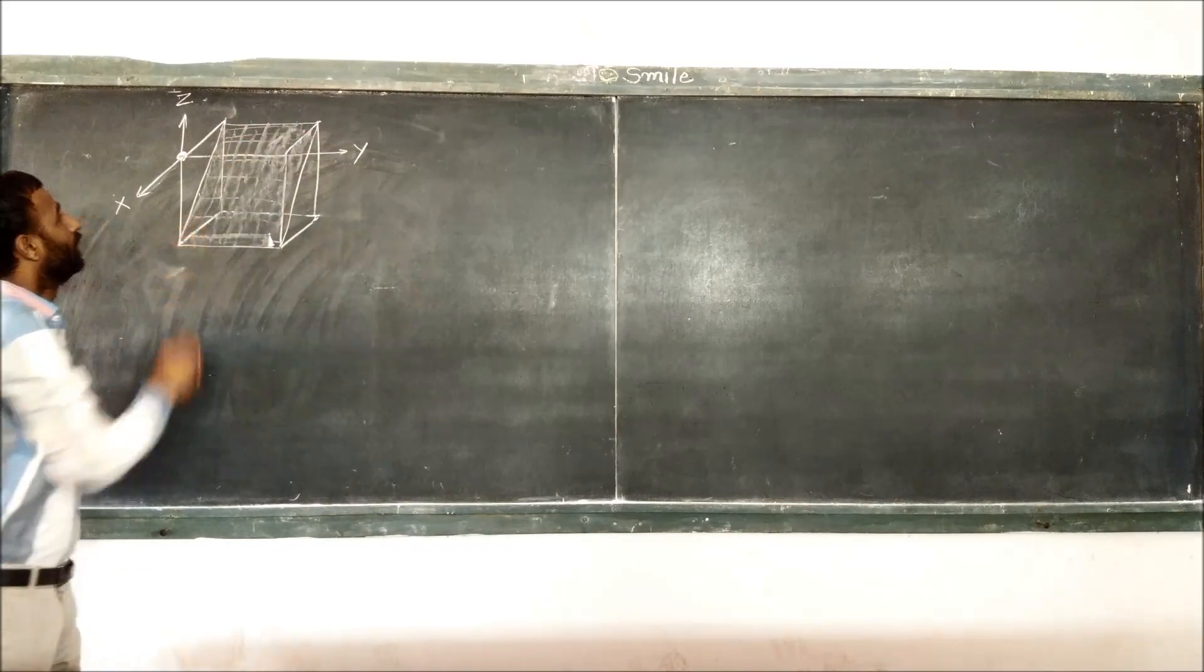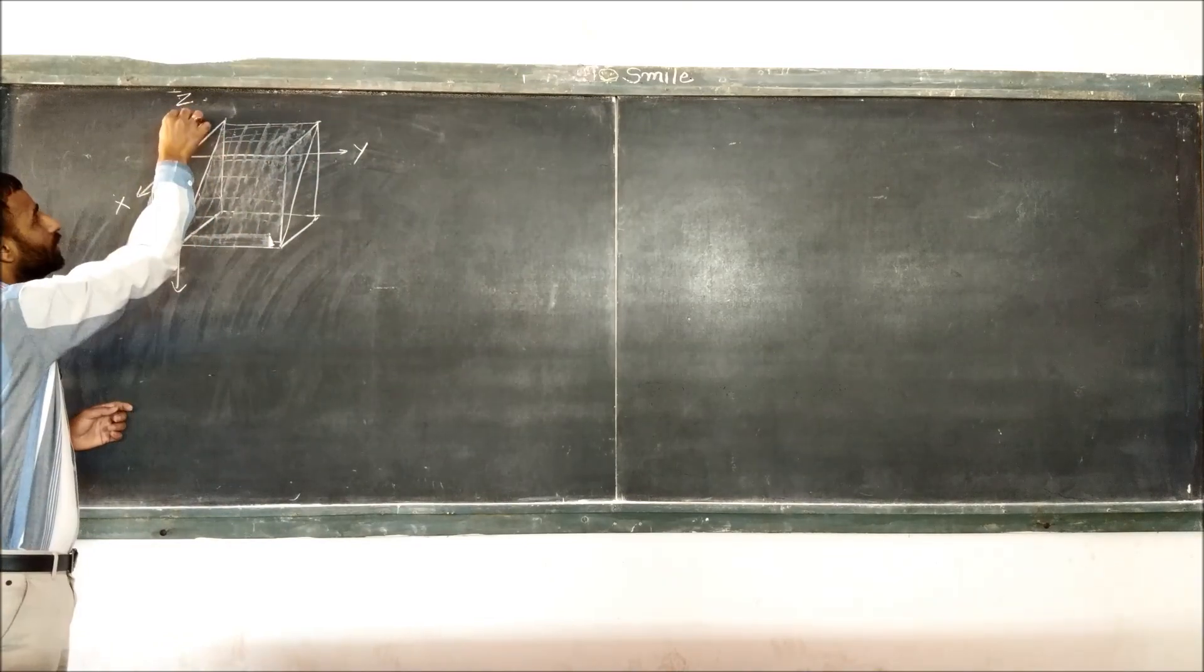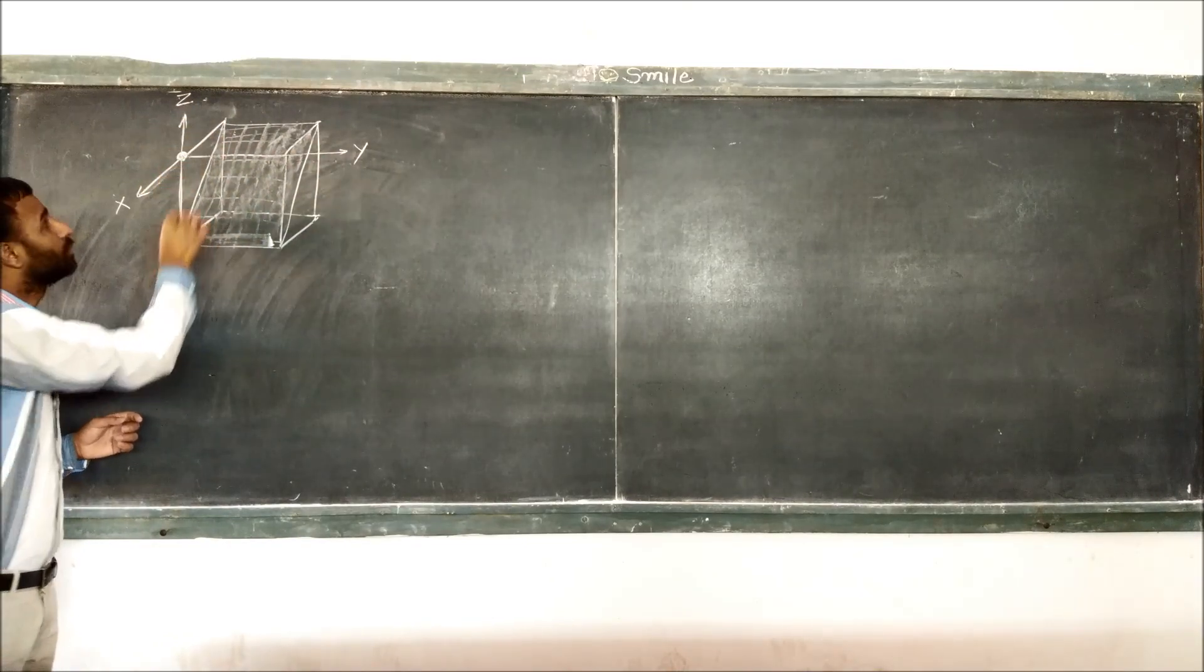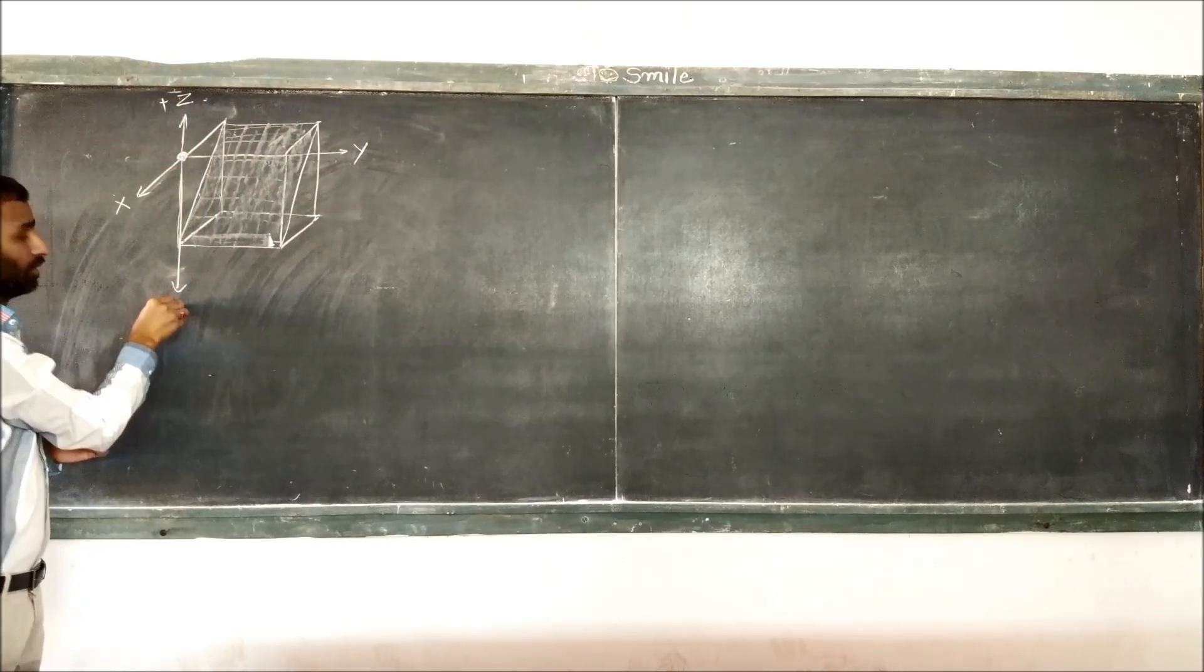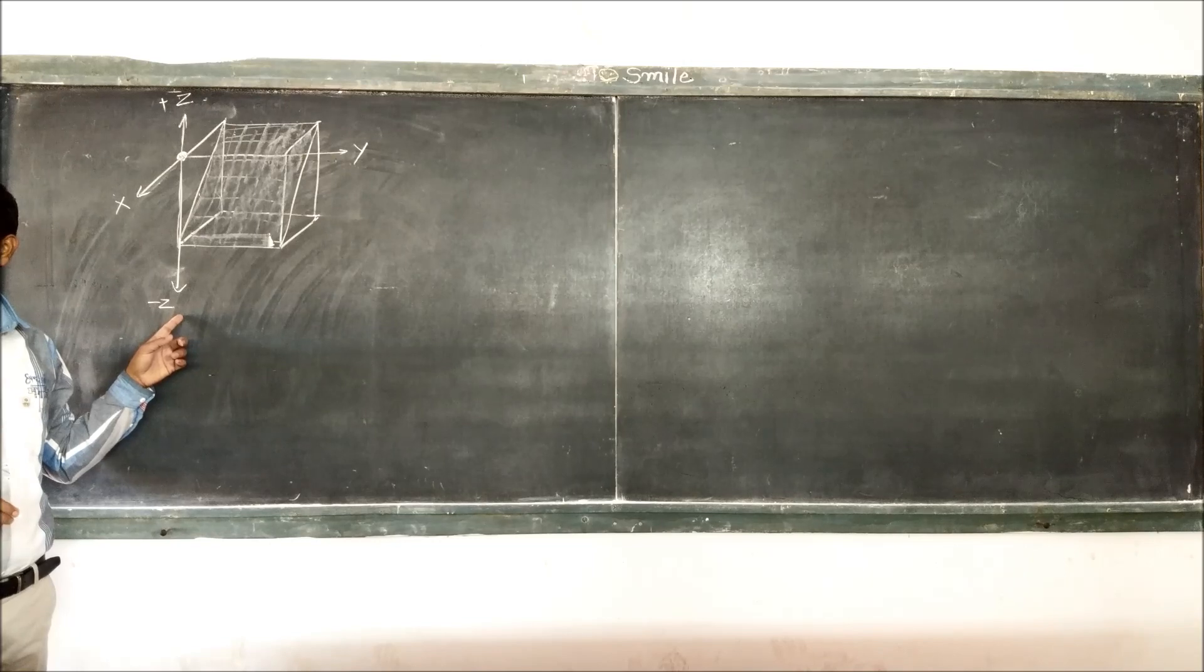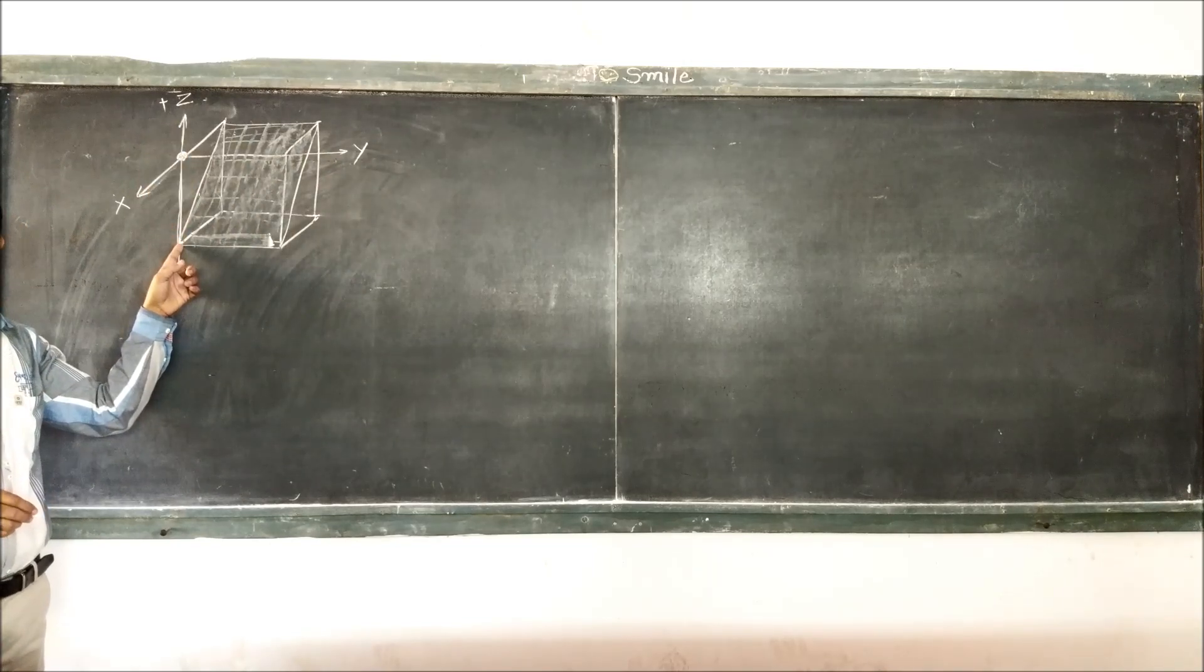Now, this plane, this plane cut z-axis. At this point, this is the z-axis, this is positive, plus z, and this is minus z. So, intercept for z-axis is minus 1.